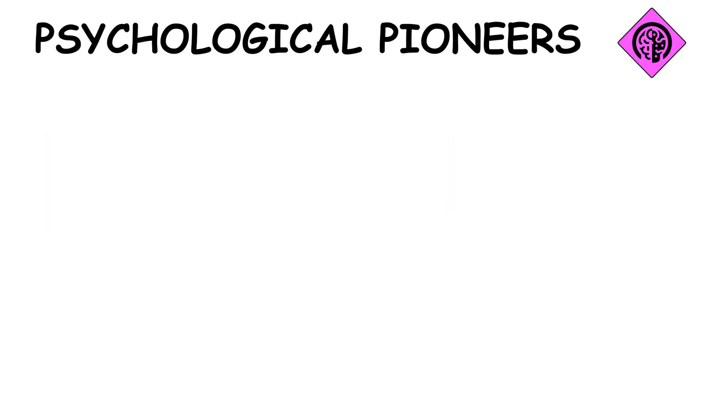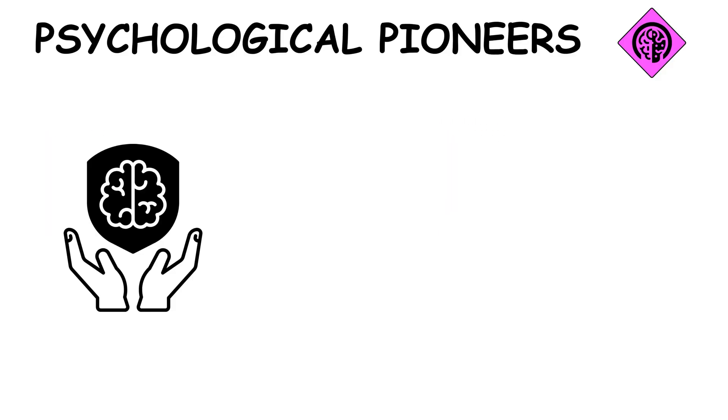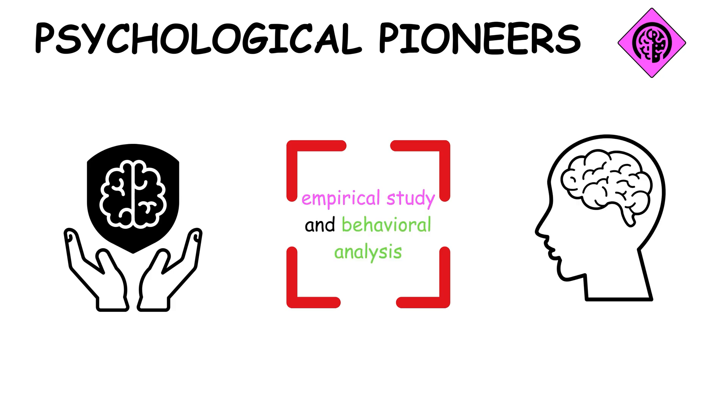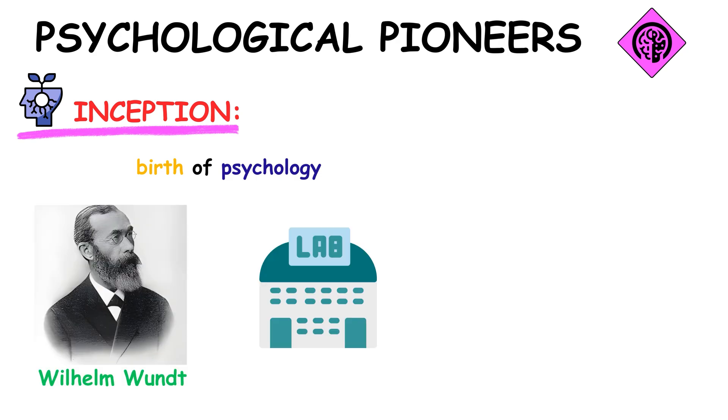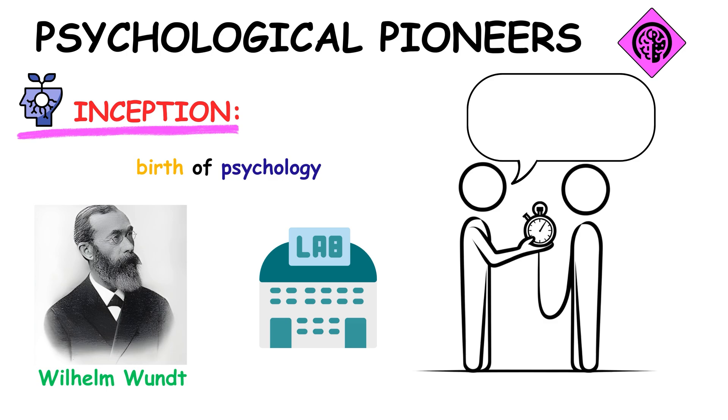Psychological pioneers laid the groundwork for modern psychology, shifting focus towards empirical study and behavioral analysis of the mind. The birth of psychology as a science brought figures like Wilhelm Wundt, who opened the first lab dedicated to psychological research, aiming to quantify and understand the workings of the mind.